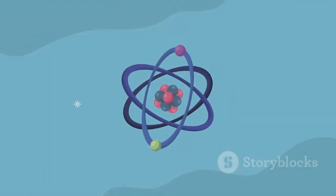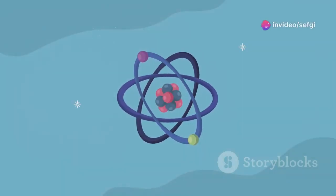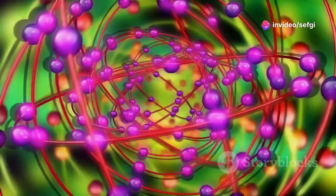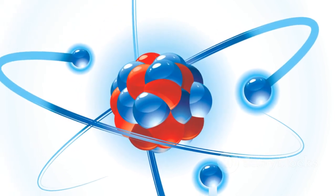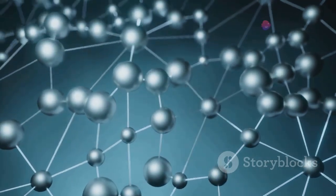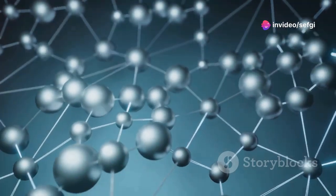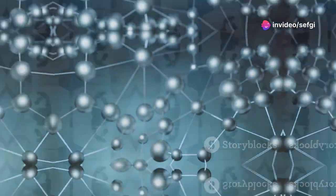The electrons, on the other hand, are spread out in a cloud-like region around the nucleus. They are constantly moving, buzzing around the nucleus like bees around a hive. The way these electrons are arranged determines the atom's chemical properties. It dictates how atoms bond with each other to form molecules and, ultimately, everything we see around us.